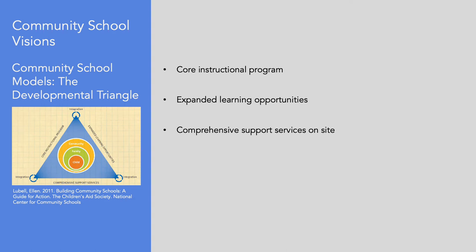Another popular model is the developmental triangle. Each side of the triangle is connected to and integrates three key concepts: core instructional programming, expanded learning opportunities, and comprehensive support services on-site. The three sides of the triangle form a framework around the community, the family, and the child.